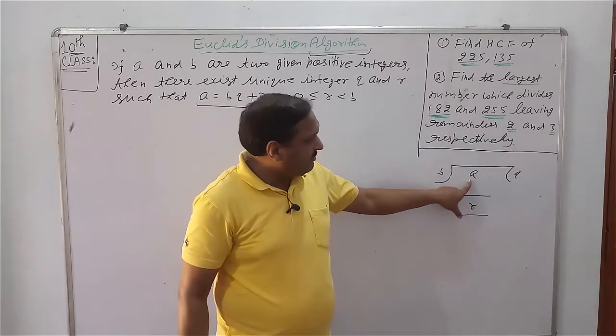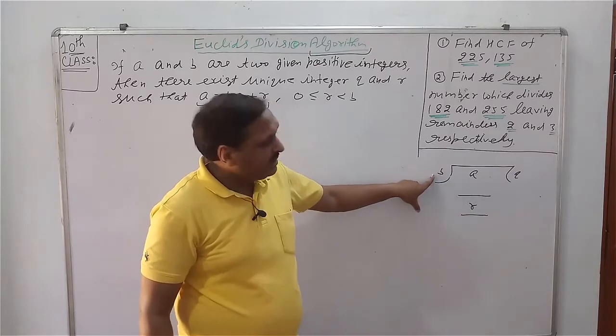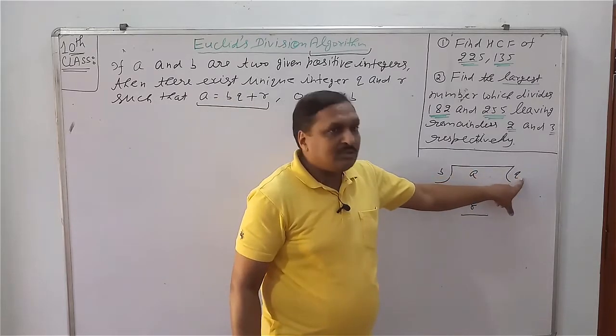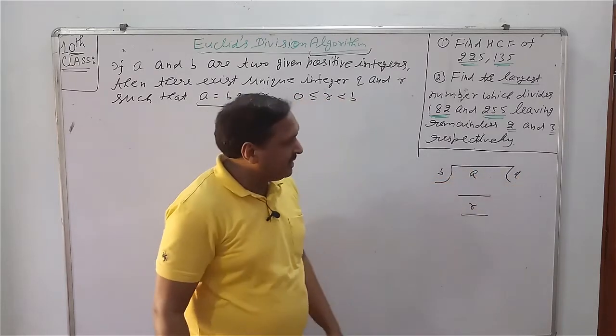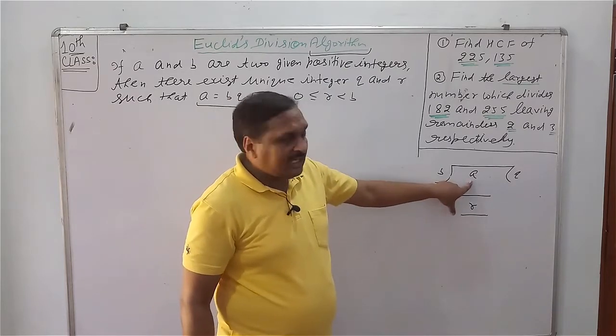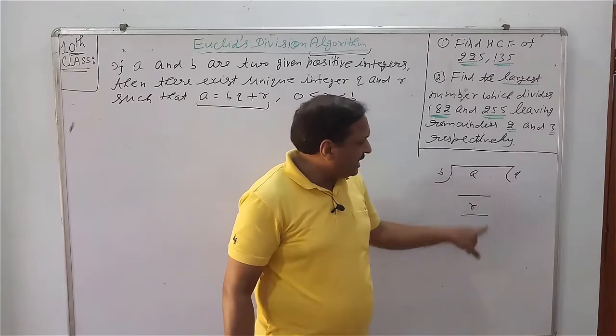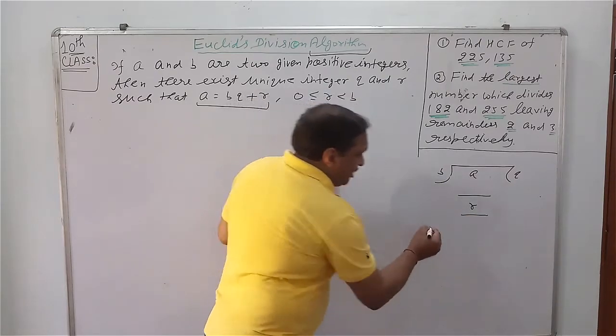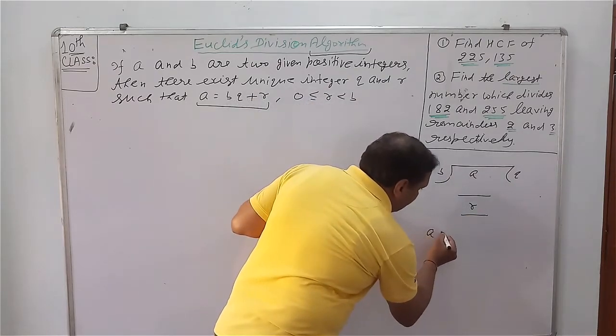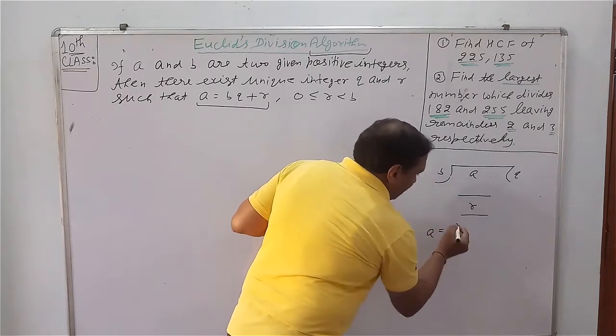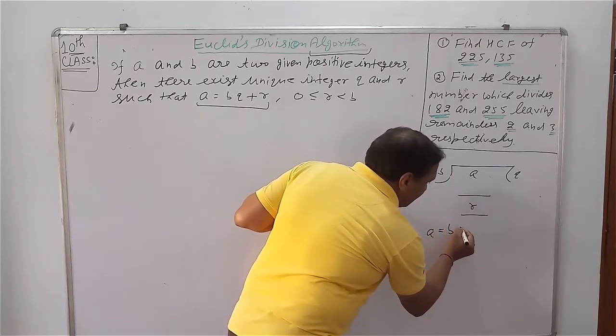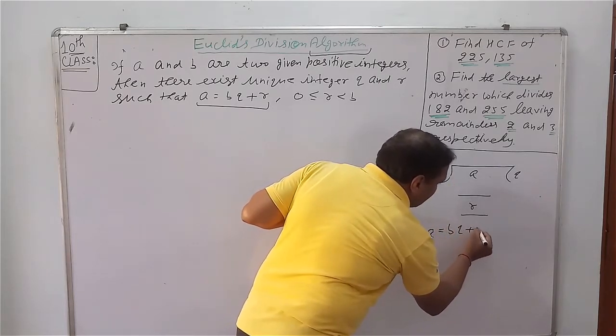A is called dividend, B is called divisor, Q is called quotient and R is remainder. When we divide A by B, we get Q as quotient and R as remainder. And you know, dividend is equal to divisor multiply quotient plus R.